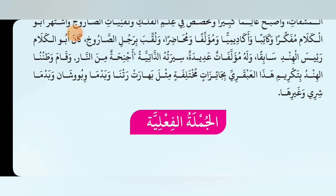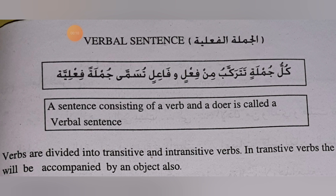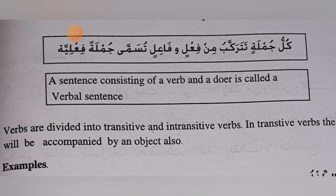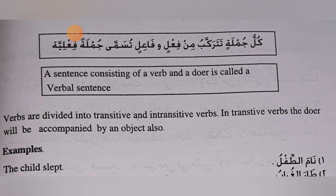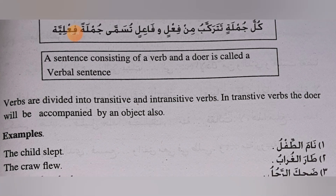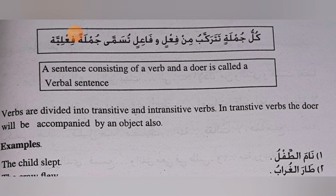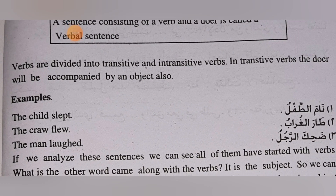Now we have to learn al-Jumla al-Fi'liyya — the verbal sentence. Its definition is: Kullu jumlatin tatarakkab min fi'lin wa fa'ilin tusamma jumlatan fi'liyyatan — every sentence consisting of a verb and a doer is called a verbal sentence. There are two types of verbs — transitive and intransitive. In transitive verbs, the doer is accompanied by an object as well.